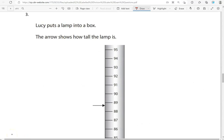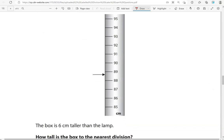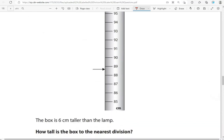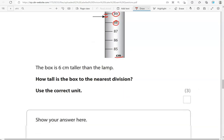Lucy puts a lamp into a box. The arrow shows how tall the lamp is. The box is 6 centimeters taller than the lamp. How tall is the box to the nearest division? So the lamp, that is in between 88 and 89, but it's closer to 89. So it's 89 centimeters.